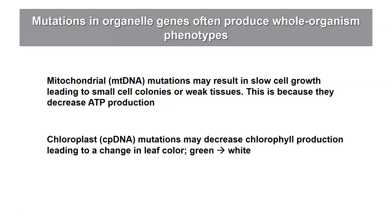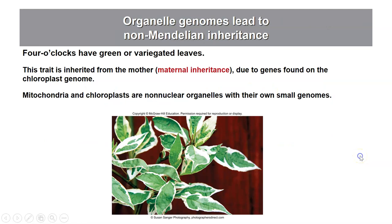When a chloroplast makes a carbohydrate in a plant cell, that carbohydrate is used by the mitochondria to generate ATP. So a similar phenotype — lack of sufficient energy — can result from mutations in chloroplast genes. In addition, if a mutation creates a defect in producing chlorophyll, it may affect the color of the cells. Plant cells with chlorophyll appear green, but if the mutation affects chlorophyll production, those cells will appear white instead.